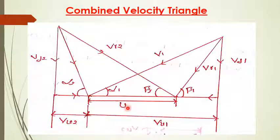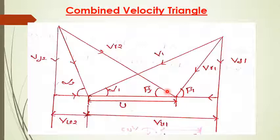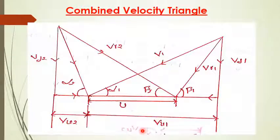In the combined velocity triangle: U is the tangential speed of the rotor; V1 is the absolute velocity at inlet; V2 is the absolute velocity at outlet; Vr1 is the relative velocity at inlet; Vr2 is the relative velocity at outlet; Vf1 is the radial component of absolute velocity at inlet; Vu1 is the tangential component of absolute velocity at inlet; and Vu2 is the tangential component of absolute velocity at outlet.